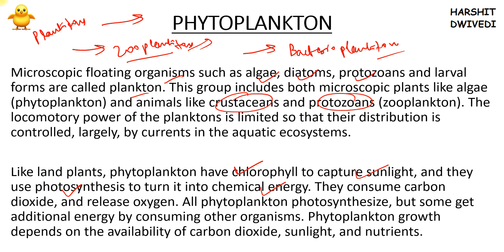The third classification is bacterioplankton. There is not much to discuss about bacterioplankton — these are algae and bacteria which are essential for nutrient cycling in a water ecosystem. Now, one important fact about planktons is that they don't have strong locomotory powers — their locomotory power is very limited, almost non-existent. So the distribution of plankton is decided by the extent of currents in the aquatic ecosystem. Planktons move according to the currents of the water.